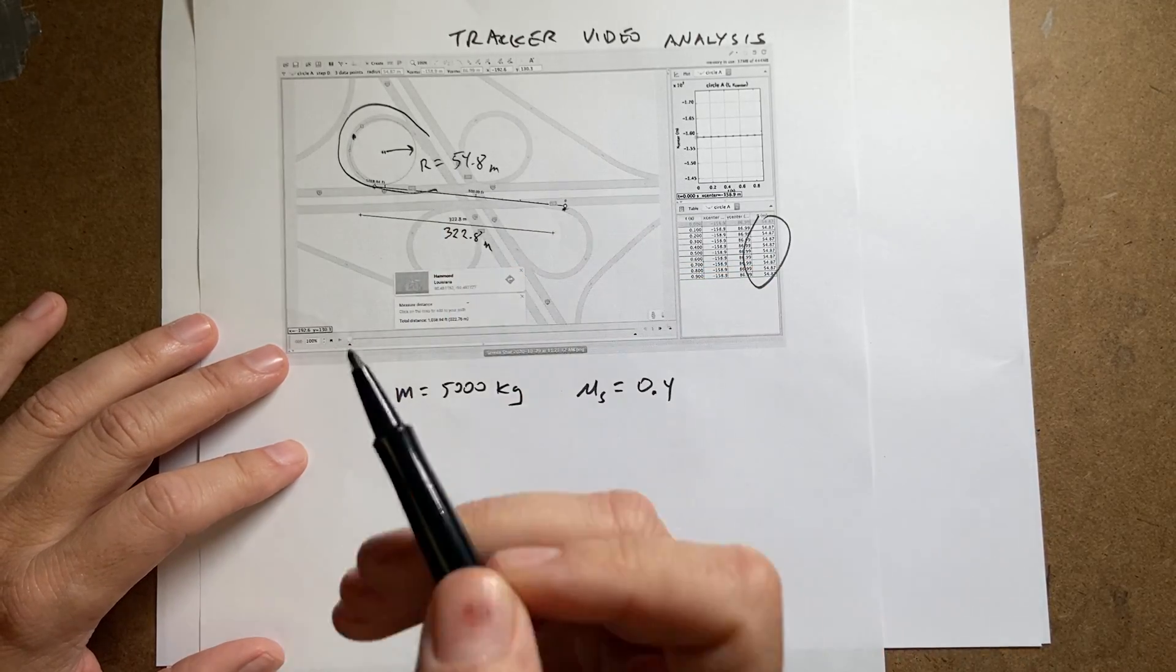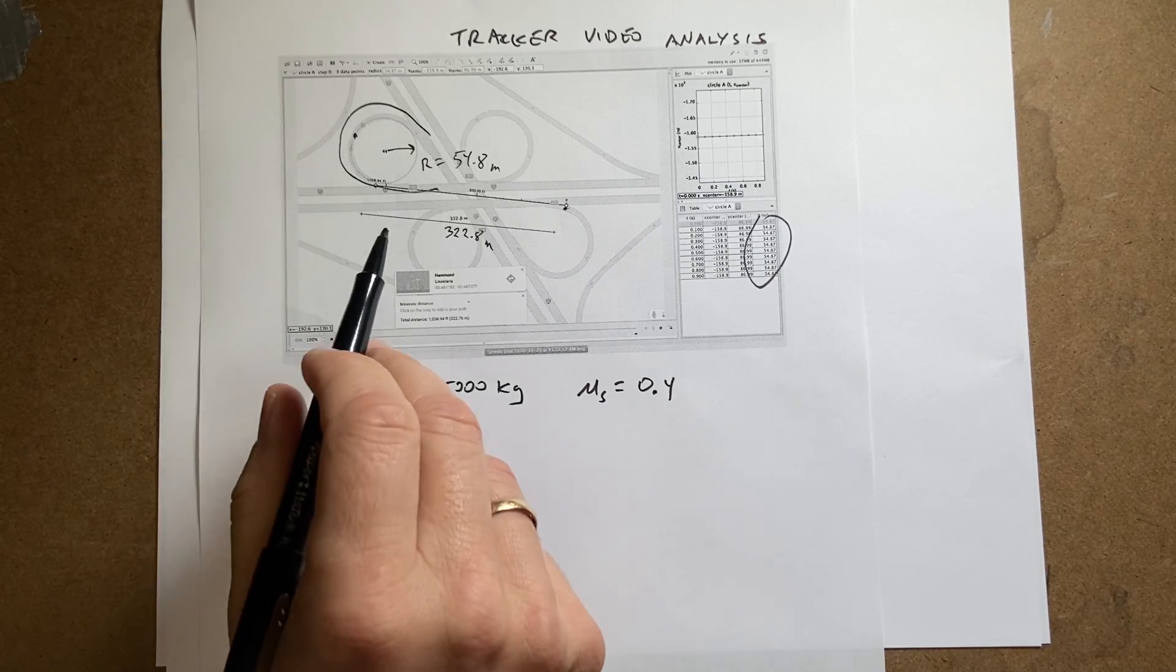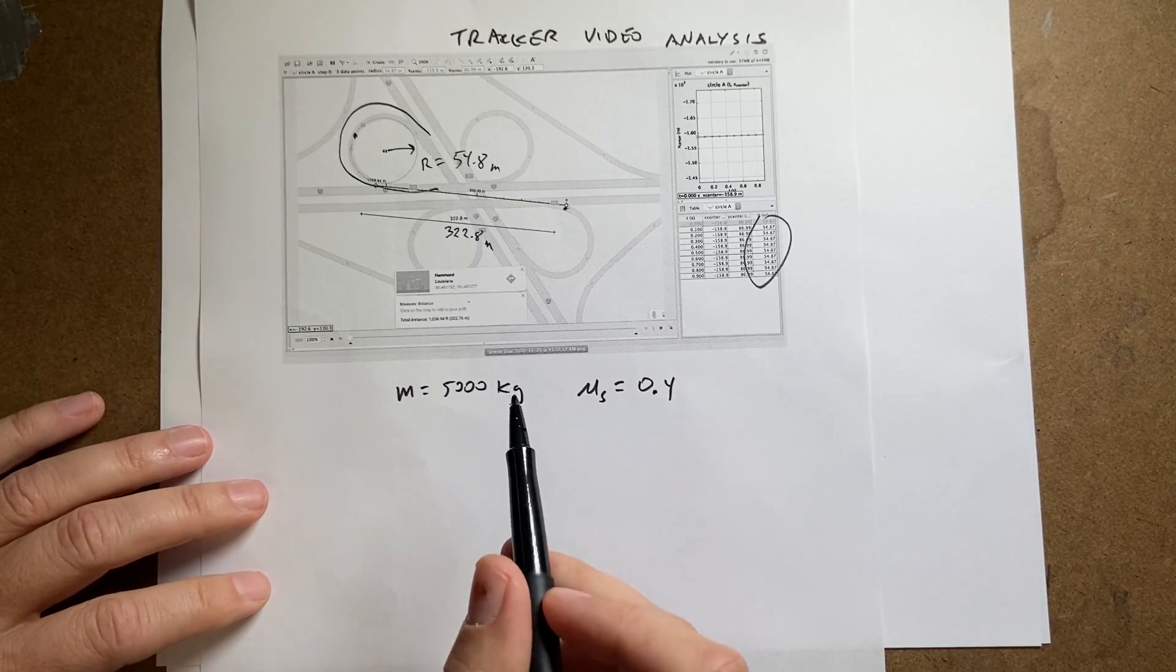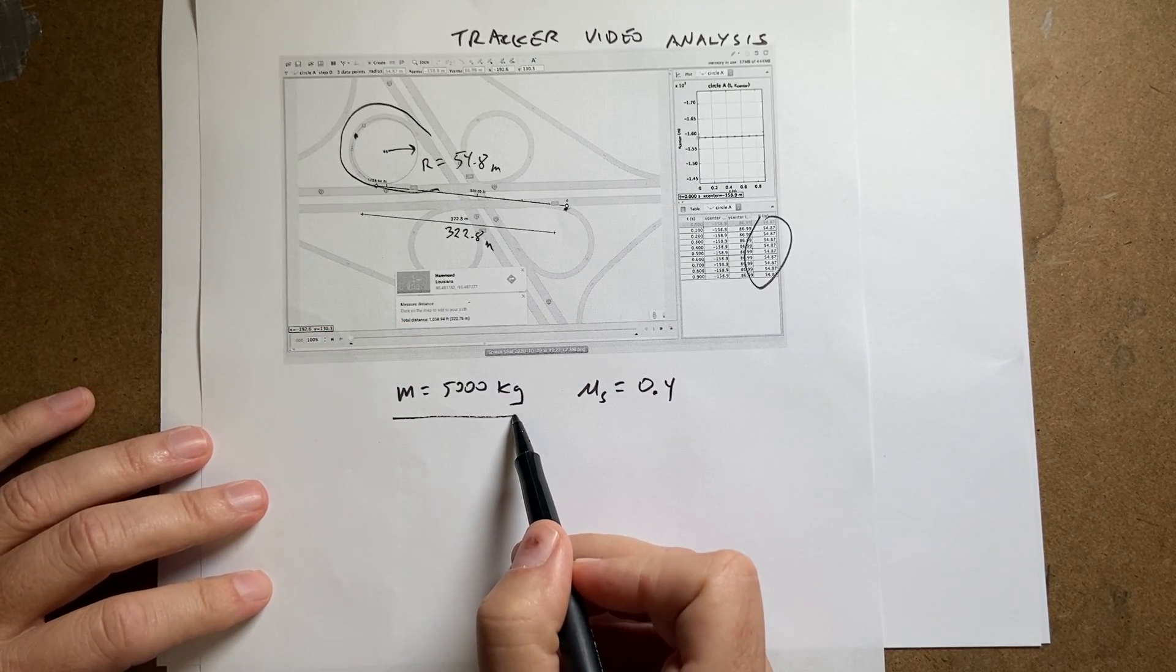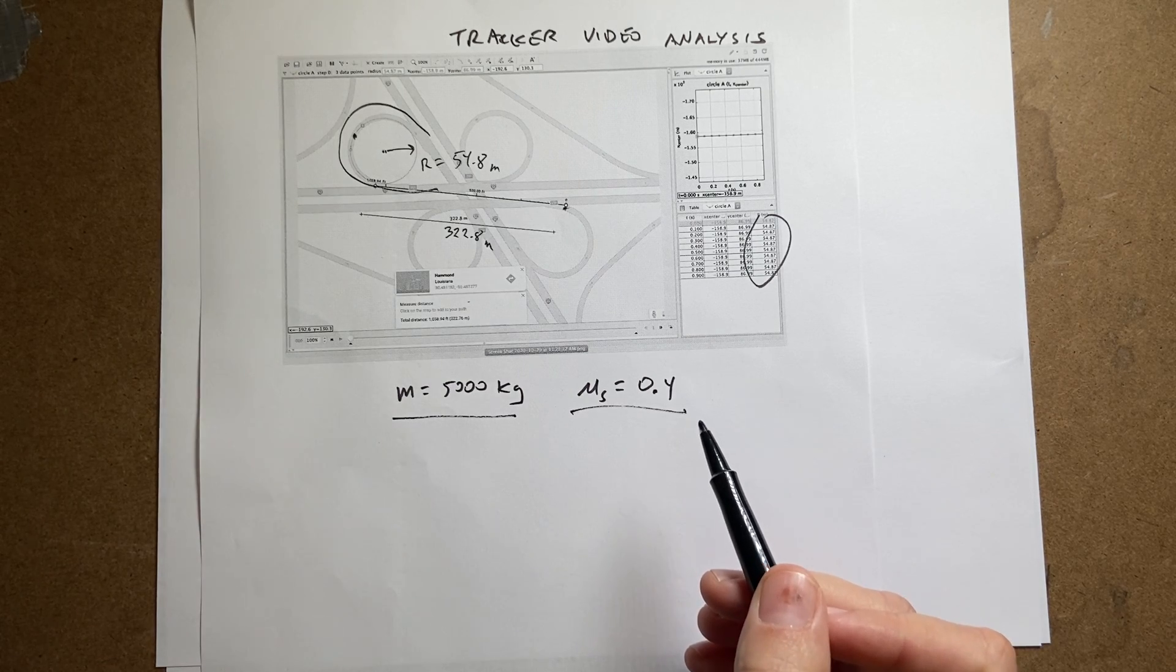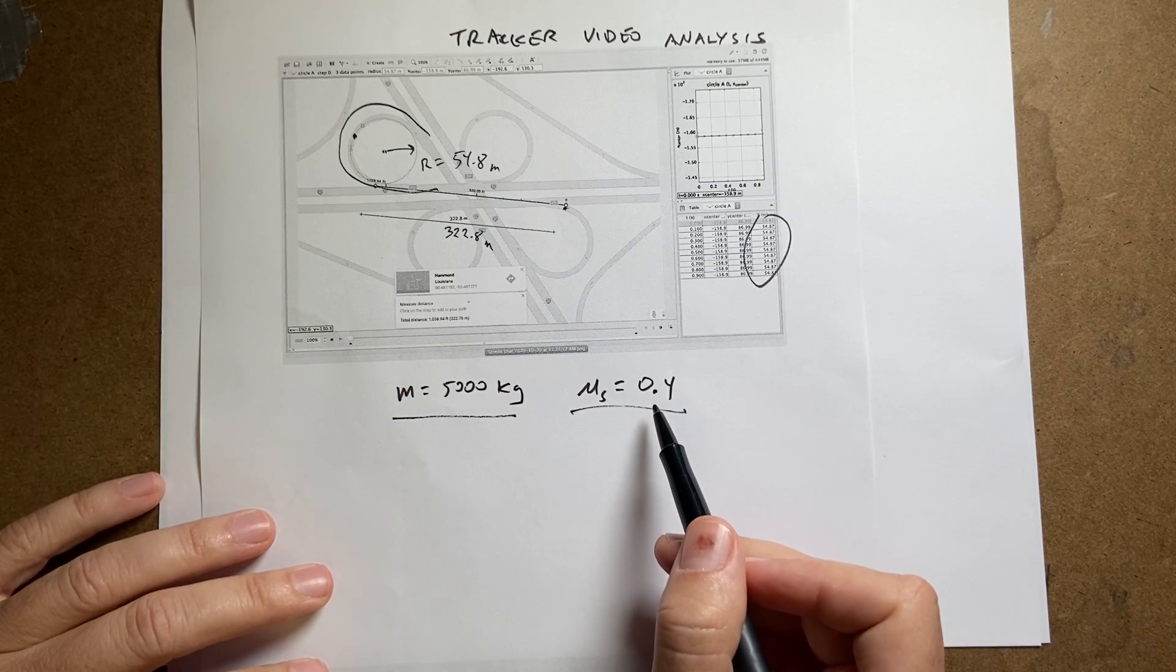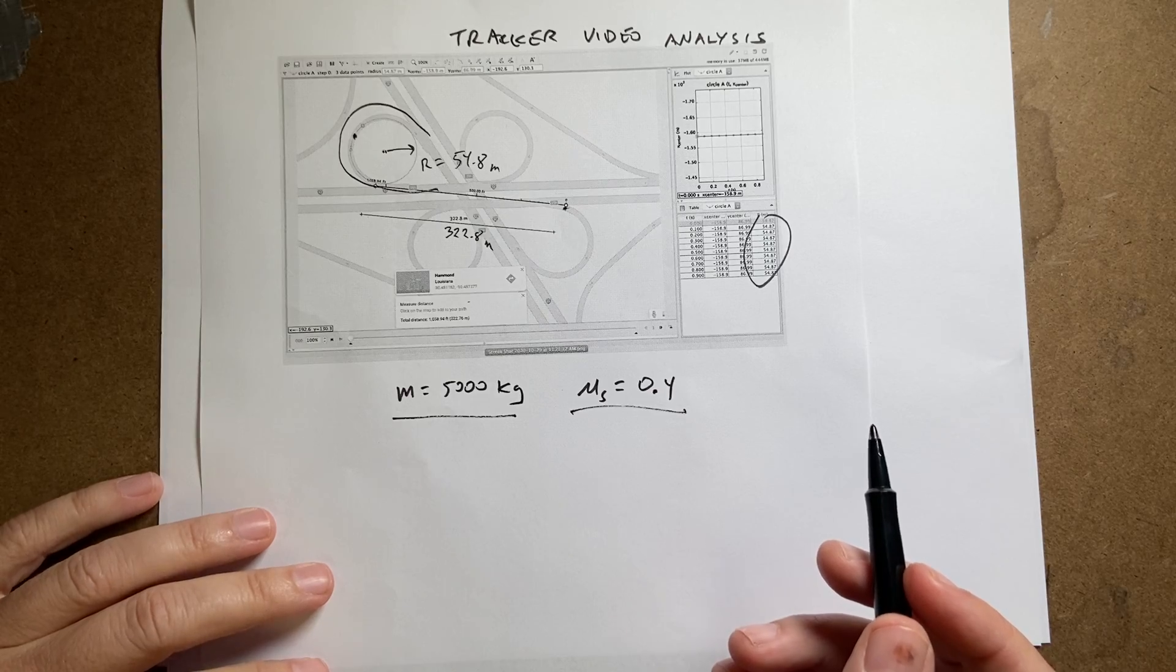So that's really what I want to do. I want to look at how fast a car can move in a circular radius of 54.8 meters. I picked the mass of the car as 5,000 kilograms and the coefficient of static friction of 0.4. That's it. It has no units.